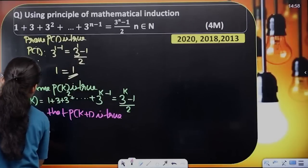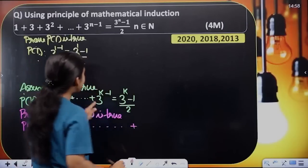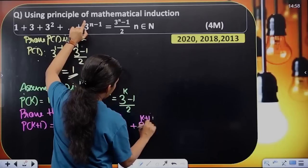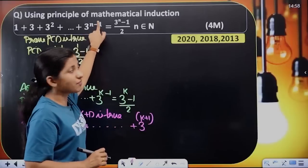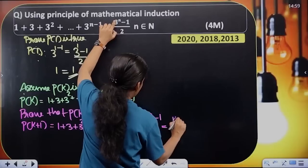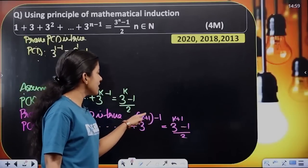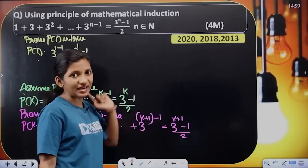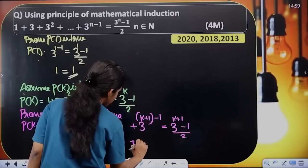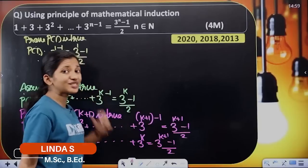P of k plus 1 equals 1 plus 3 plus 3 squared plus etc. up to 3 raised to k, and in the place k plus 1, so 3 raised to k plus 1 minus 1. RHS equals 3 raised to k plus 1 minus 1 by 2. Next step: 1 plus 3 plus 3 squared plus etc. up to plus 3 raised to k equals RHS 3 raised to k plus 1 minus 1 by 2.